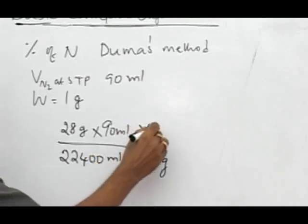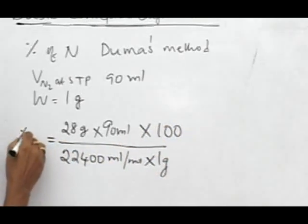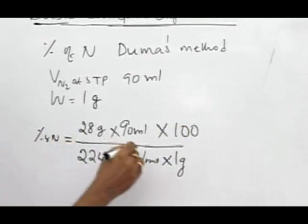If we want the percentage, we multiply with 100. So this formula will take care of the percentage of nitrogen. On solving that,